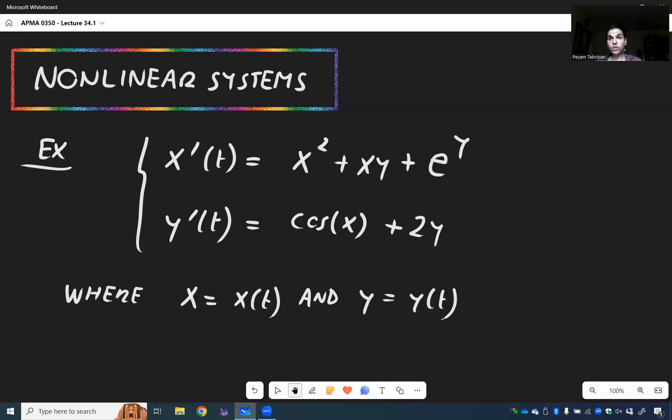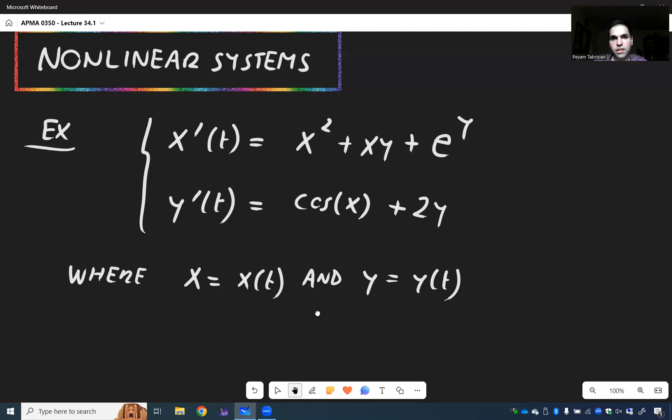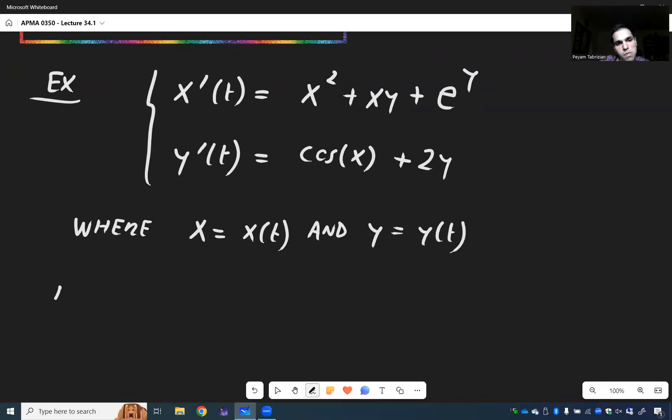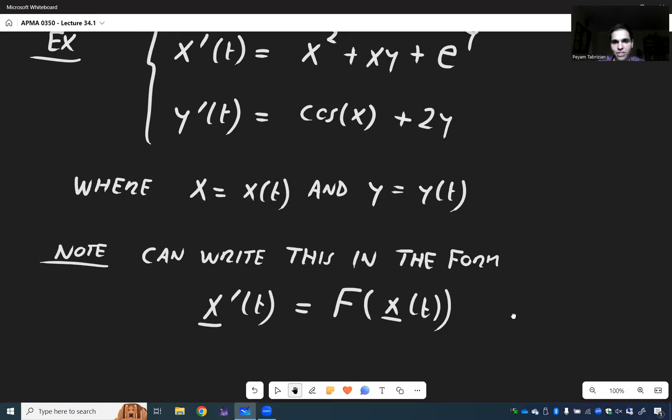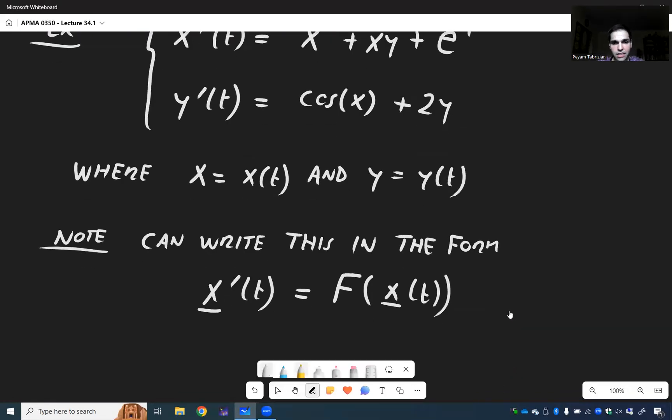And the first thing to notice is that we can actually write this in vector form. So note, we can write this in the form where x prime of t is not Ax, but a nonlinear function of x.